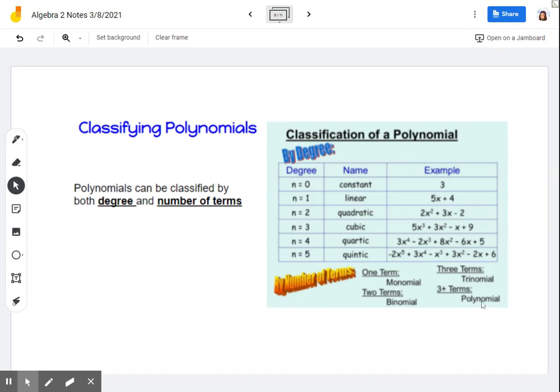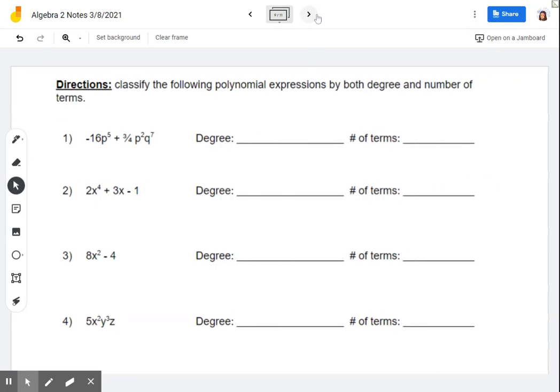Poly, the prefix of poly just means many. So anything greater than three terms, we're just going to generically call it a polynomial. So let's take a look at the examples on the next page.